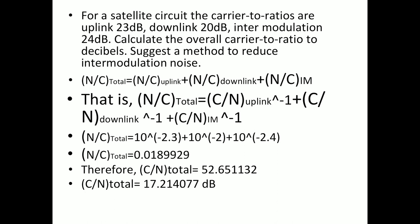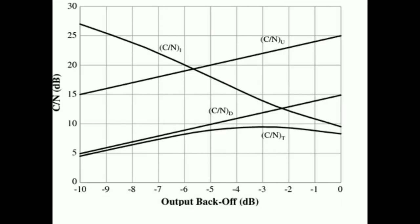It is important to remember that these N/C values must be in the normal scale, not in dB. So all values must first be converted: C/N uplink becomes 10^2.3, C/N downlink becomes 10^2.0, and C/N intermodulation becomes 10^2.4. Substituting into the expression, N/C total comes out to 0.01899. Inverting gives C/N total as 52.65, and converting to dB: 10 log(52.65) equals 17.21 dB.